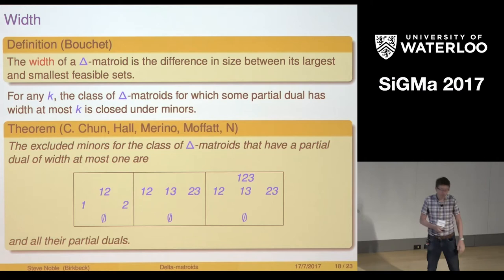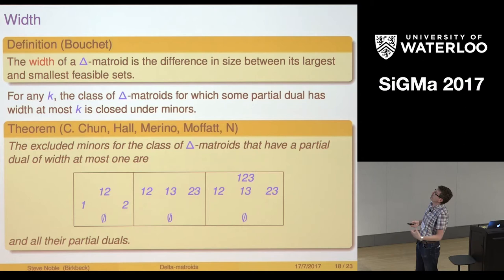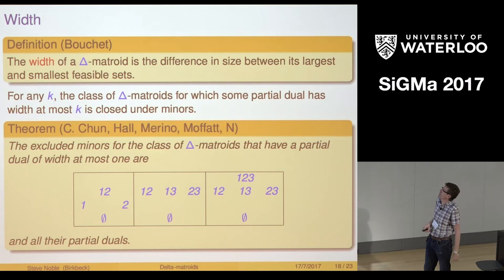This result basically comes from considering the ribbon graph. Ian Moffitt had been working a lot on partial duals of ribbon graphs and had an equivalent result for ribbon graphs. That pointed us in the right direction. We would never have thought about this result or how to do it if we weren't guided by the ribbon graphs.